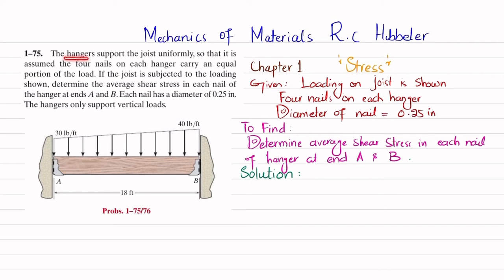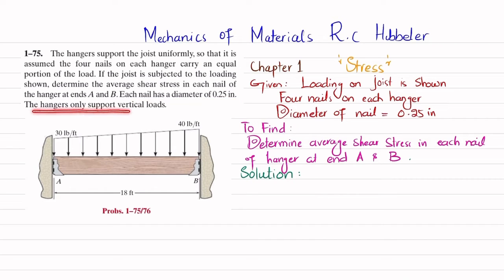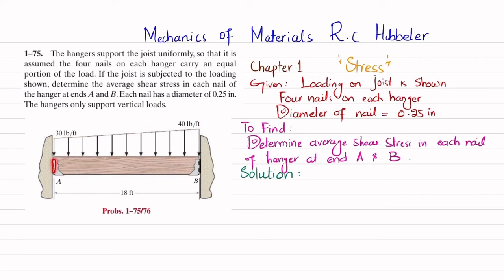The problem statement is: the hanger supports the joist uniformly so that it assumes the four nails on each hanger carry an equal portion of load. If the joist is subjected to the loading shown, determine the average shear stress in each nail of the hanger at A and B. Each nail has a diameter of 0.25 inch and the hanger only supports vertical load. You can see this is the joist that carries the load shown, and these are the hangers at A and B that support it. Each hanger has four nails — two on each side.